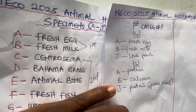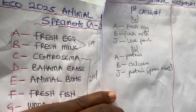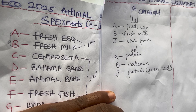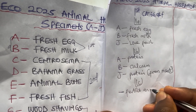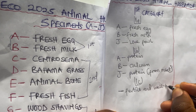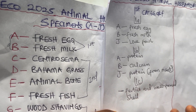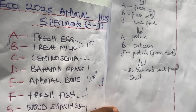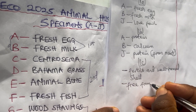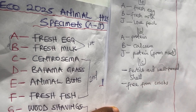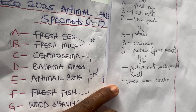Another predicted question is to list the qualities of a good egg for hatching. Number one: it must be fertile. Number two: it must have a well-formed shell. Number three: it must be free from cracks. Any egg that has these qualities can proceed for hatching.